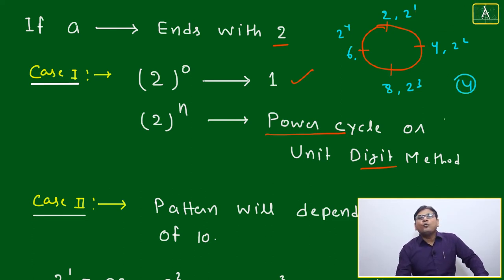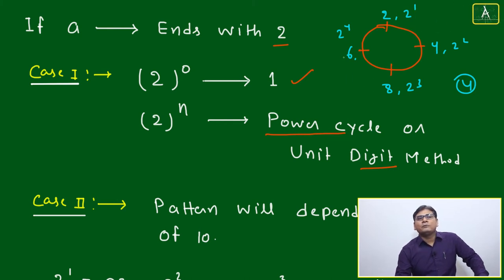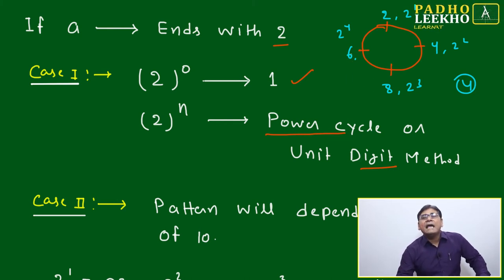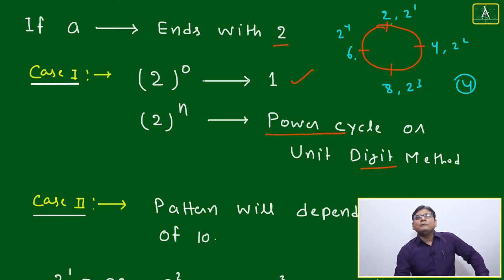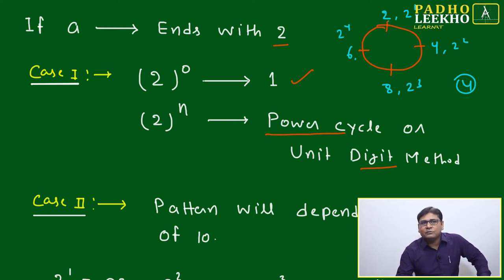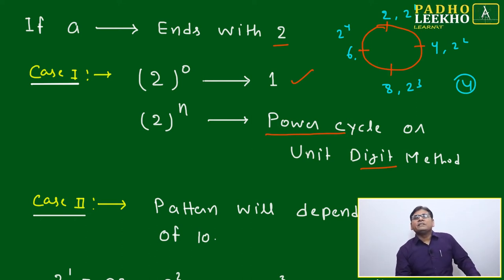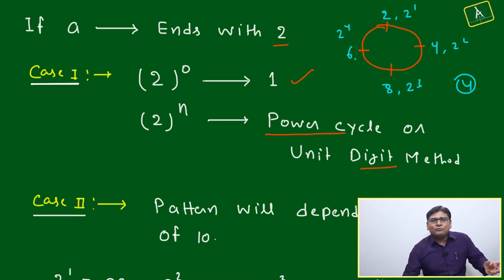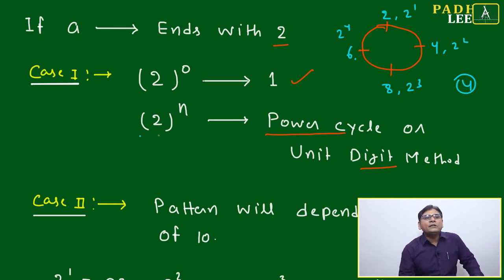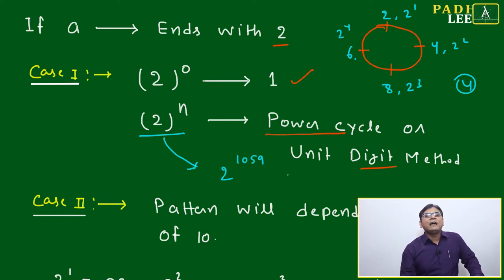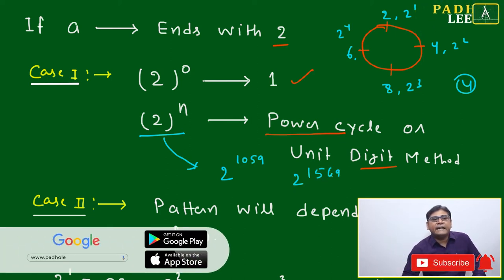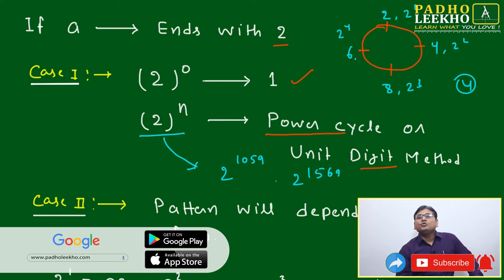The cyclicity of 2 is 4. That means: 2 to the power 1 is 2, 2 to the power 2 is 4, 2 to the power 3 is 8, 2 to the power 4 is 16 (unit digit 6). Then multiplying 16 by 2 gives 32 — unit digit 2 — and it starts to repeat. Based on the repetition pattern of the unit digit, you can find the unit digit of any number 2 to the power n.